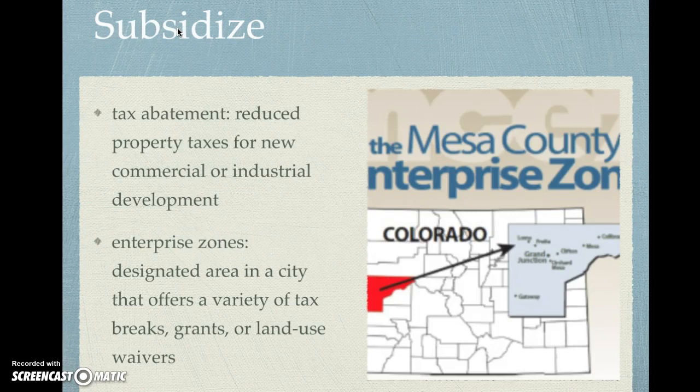On the financial side, you can do subsidies — you subsidize corporations. One common tool is a tax abatement, which means you reduce property taxes for new commercial or industrial development. This is going to be attractive to new businesses coming into a city; the incentive would be reduced property taxes.